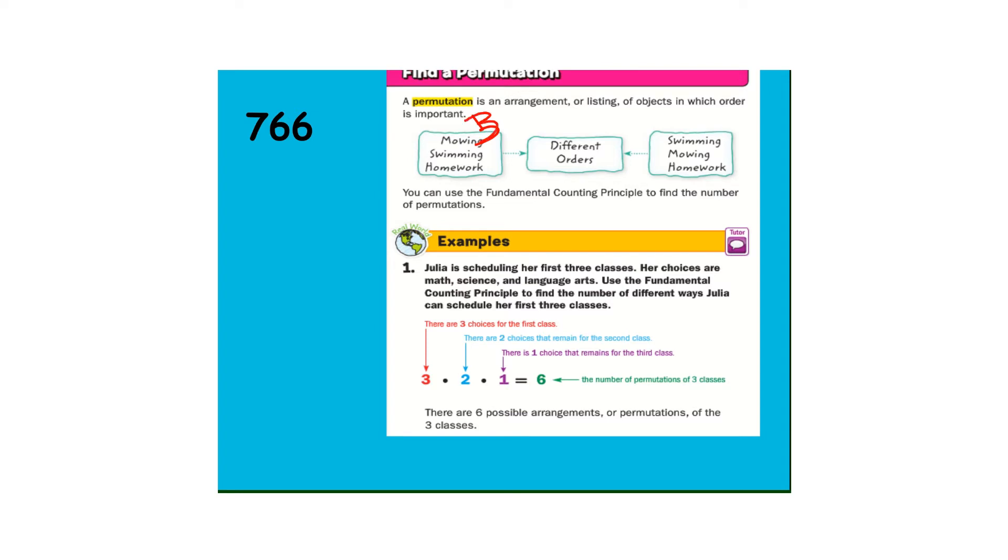So there's three choices for the first. Sorry, that should be a three. Three choices for the first activity. Two choices for the second activity. One choice for the third activity. Three times two times one. There were six different orders.